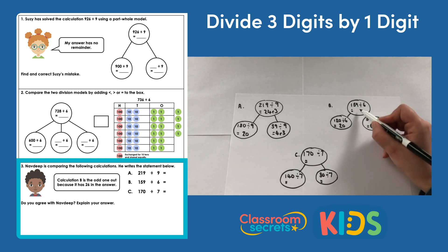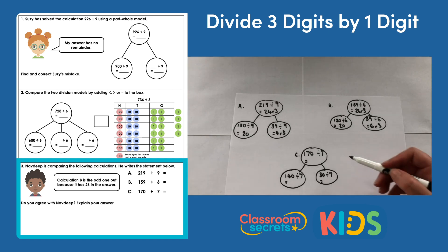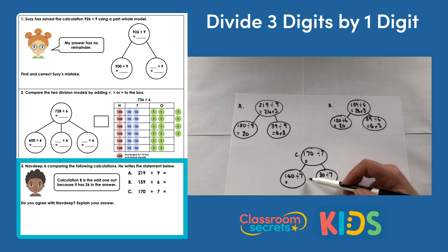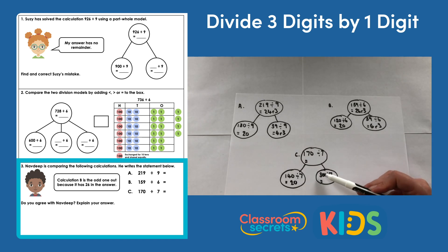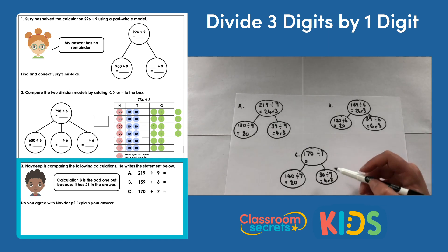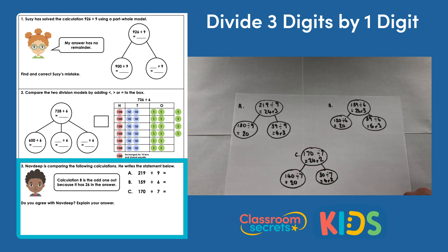Adding the two parts together gives 26 remainder 3. For calculation C, 170 divided by 7: I know I can easily divide 140 by 7 to get 20. The remaining tens are exchanged, and 30 divided by 7 can't be done exactly, but 4 times 7 is 28, leaving a remainder of 2. Adding the parts together gives 24 remainder 2.